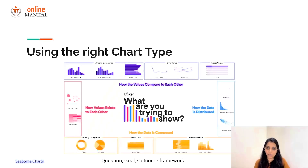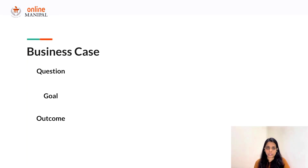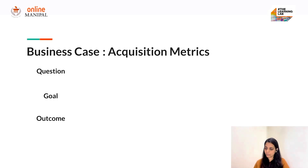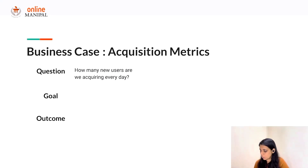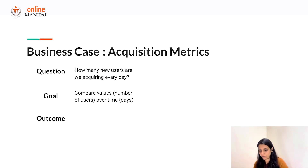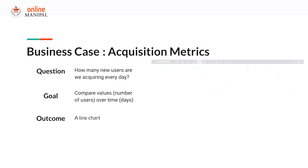Let me put on the hat of a marketing analyst and create some visualizations. The problem we want to understand is the acquisition matrix — are we getting enough customers and where are we getting them from? Starting with one primary question: how many new users are we acquiring every day? The goal is to compare values — the number of users over time — and the outcome is a line chart.